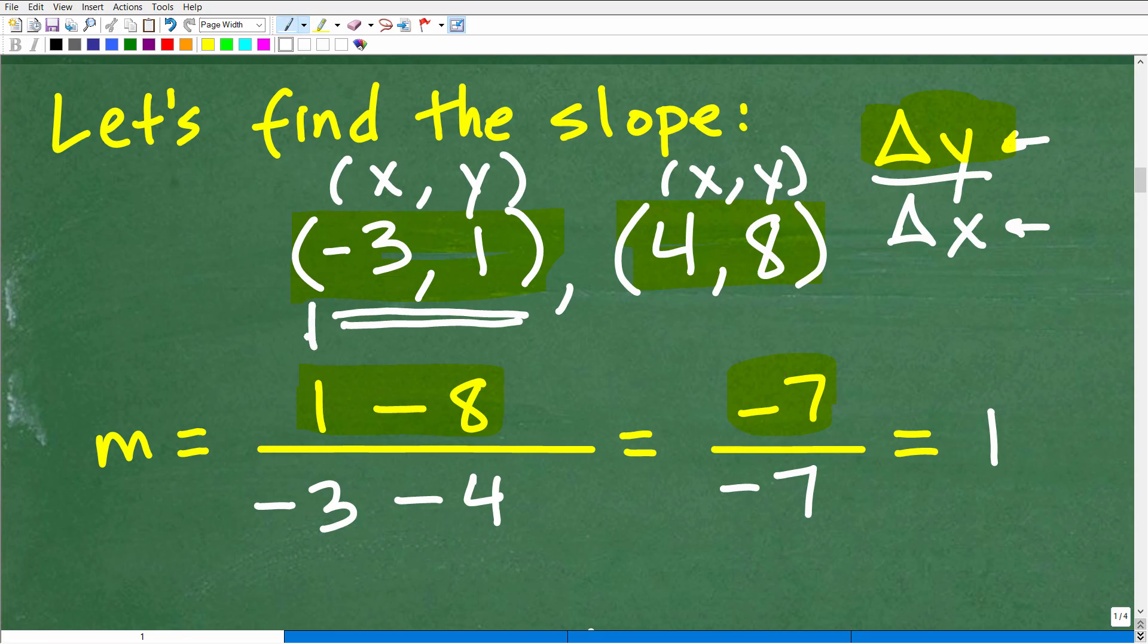Now, because I started with 1, okay, right here, I did 1 minus 8. When I subtract the y's, I must start with the x coordinate for this y. So in other words, I started with this point's information, 1. So when I subtract the x's down here, I'm sorry, I think I said y's. When I subtract the x's, I must start with the negative 3. A lot of students get confused. They're like, oh, that's 4 minus a minus 3. No, no, no.